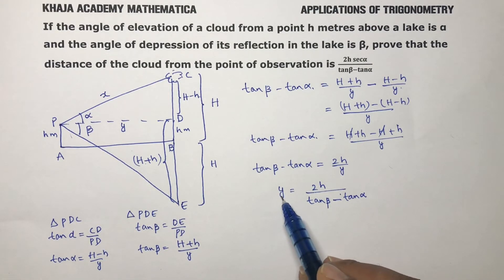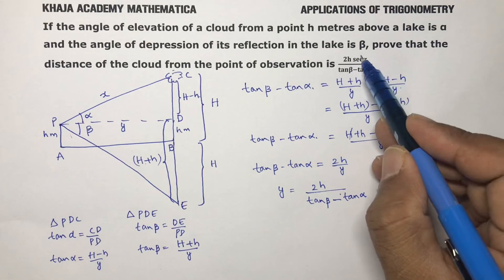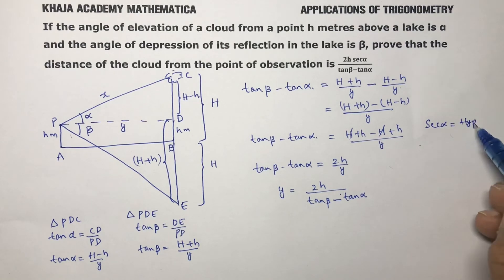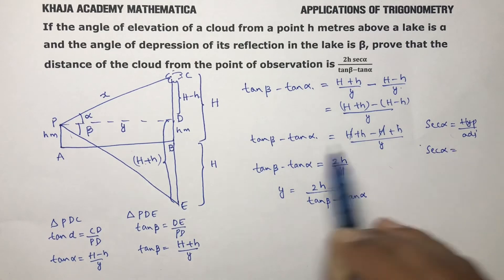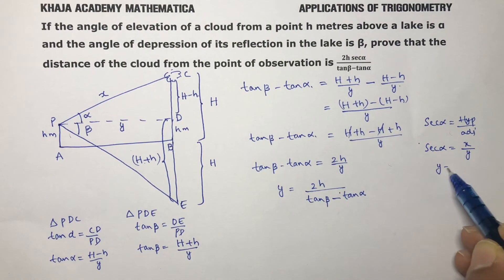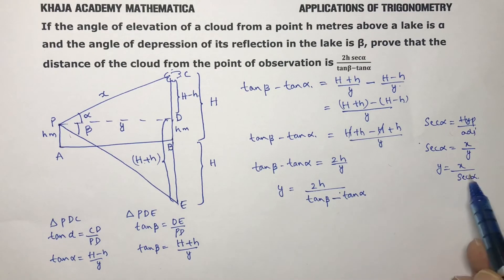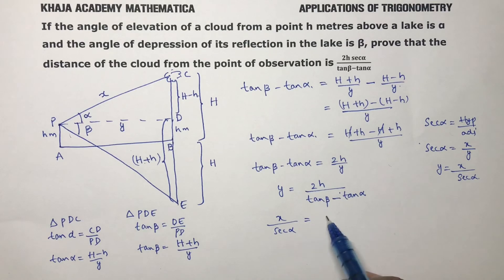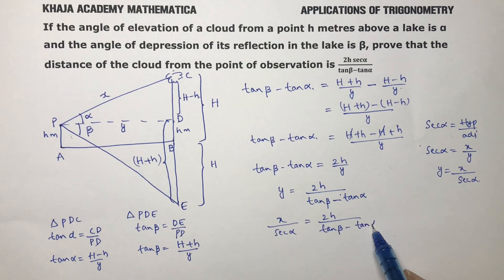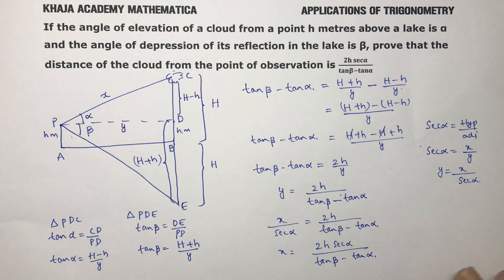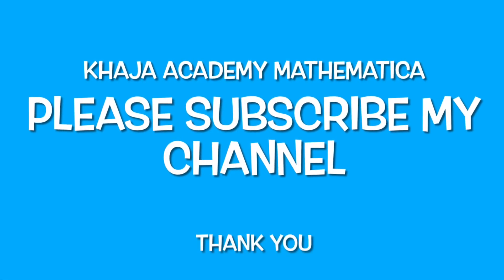We need x, not y. Since sec(alpha) = hypotenuse / adjacent, we have y = x / sec(alpha). Substituting: x / sec(alpha) = 2h / (tan(beta) − tan(alpha)). Cross-multiplying, x = 2h·sec(alpha) / (tan(beta) − tan(alpha)). Hence we have the answer.